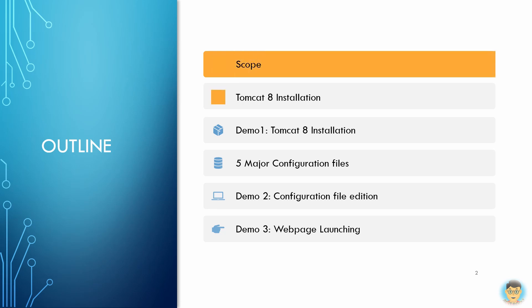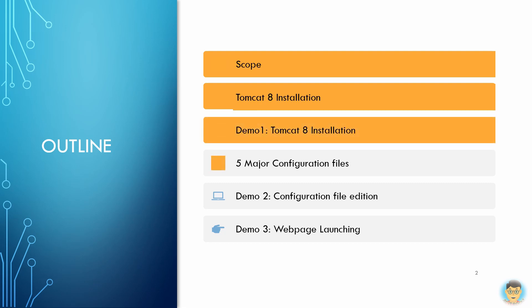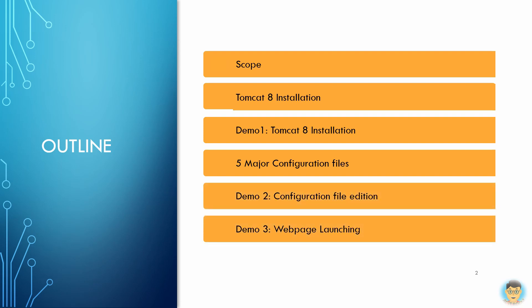First of all, the scope will point out the objectives of this video and its limitations. Then Tomcat 8 server installation and demo video are shown. In the third part, five major system configuration files are introduced. Finally, the demo for editing configuration files and launching web pages for different listen ports are shown.